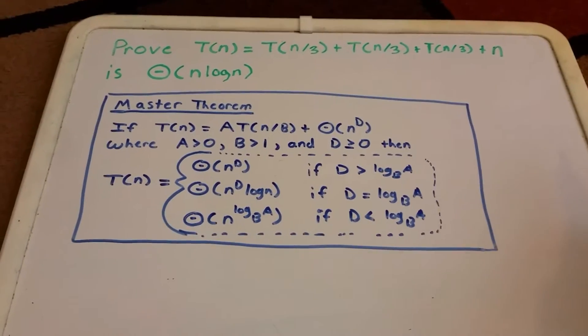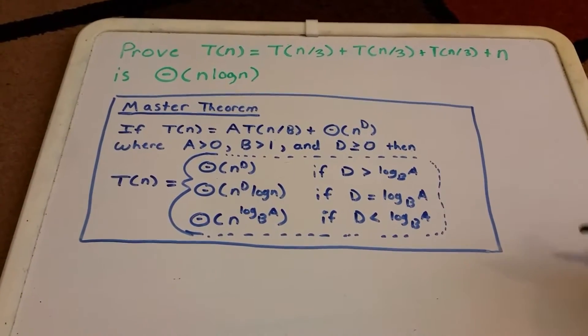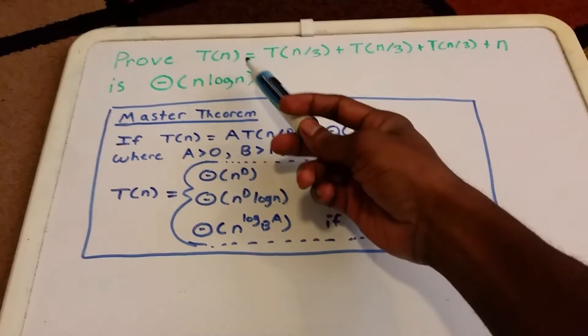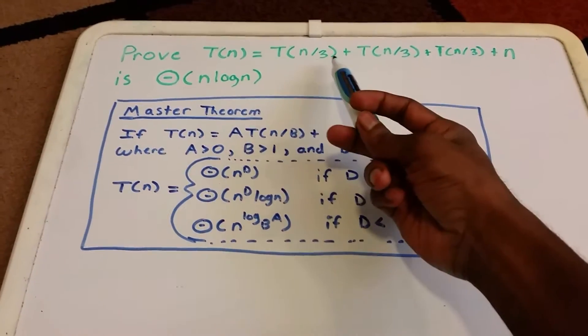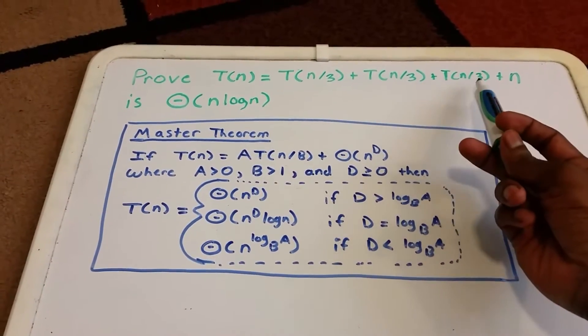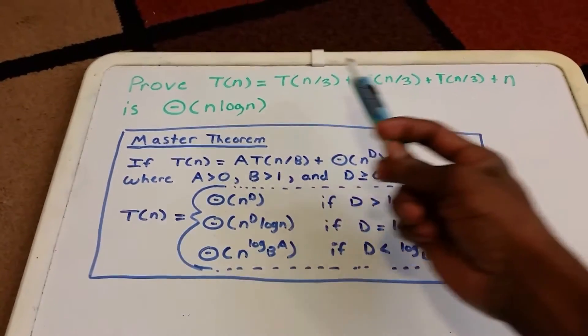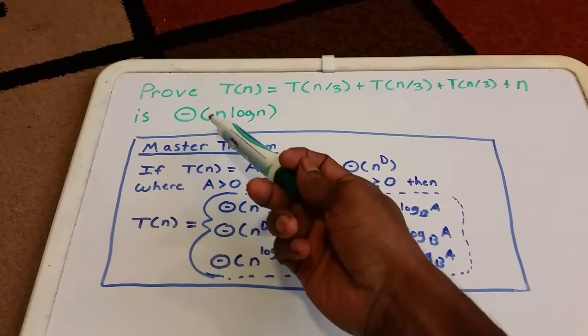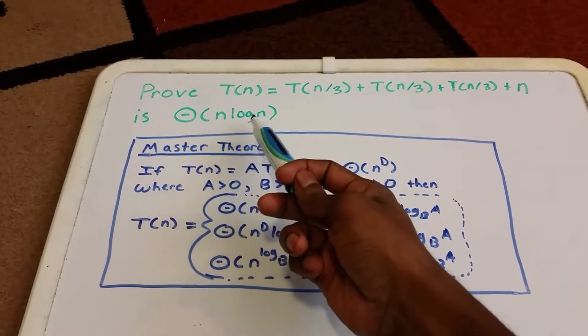Hey guys and welcome to this video on recurrence relations. We want to prove T(n) = T(n/3) + T(n/3) + T(n/3) + n is Θ(n log n).